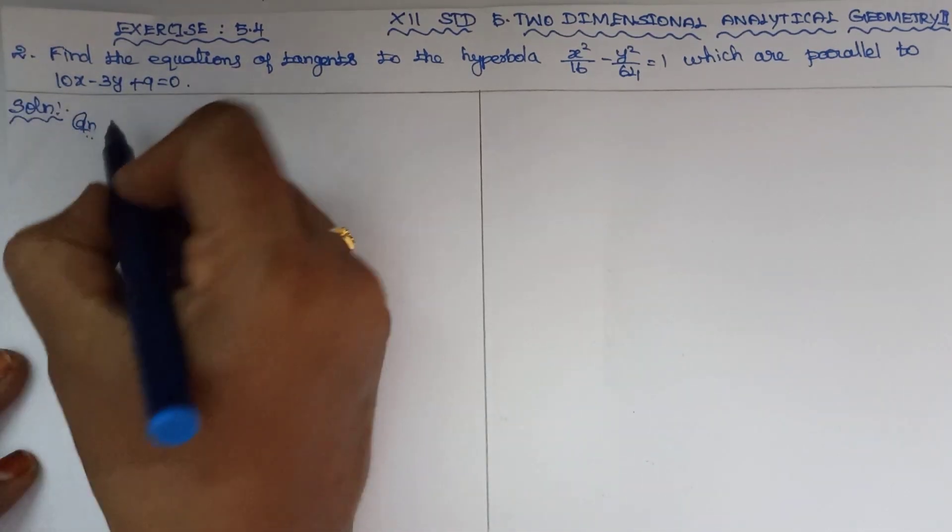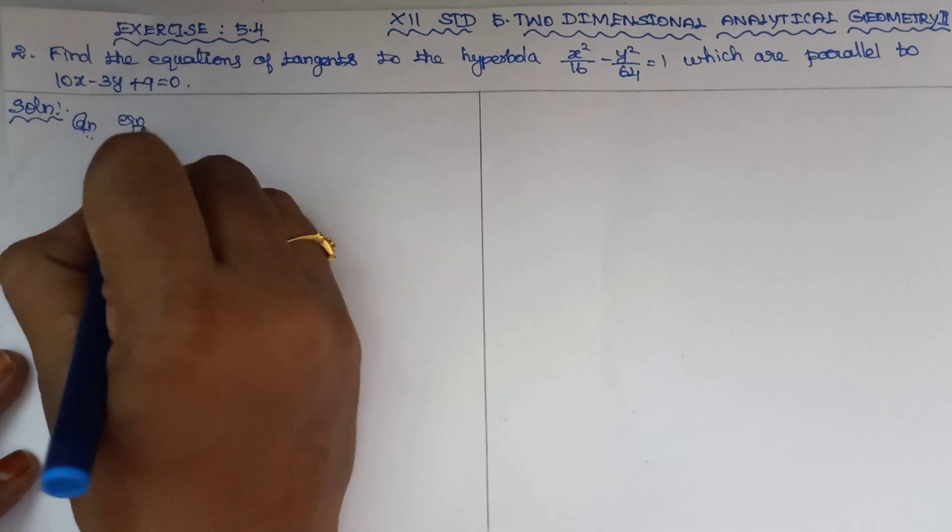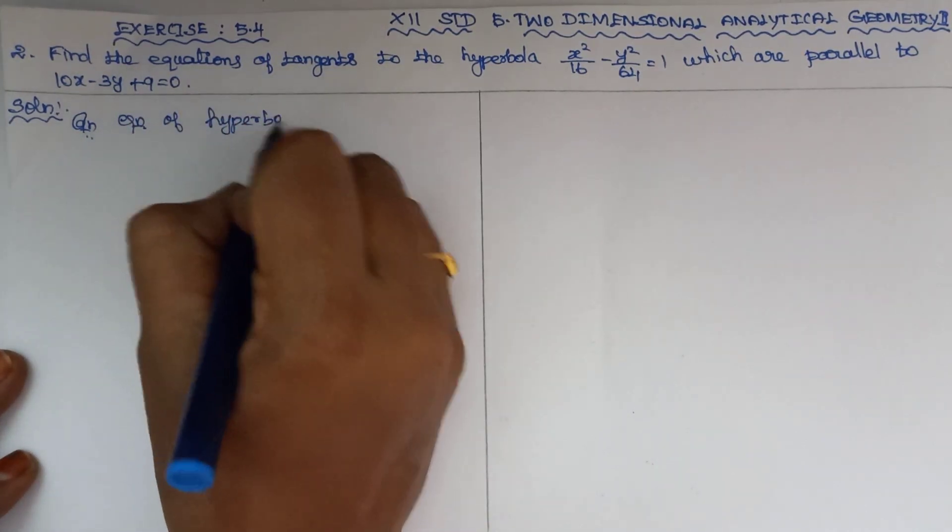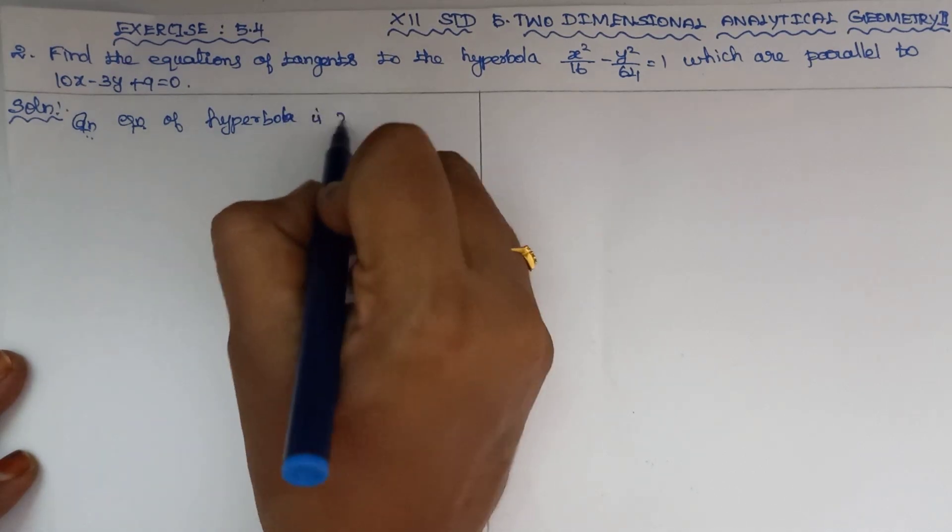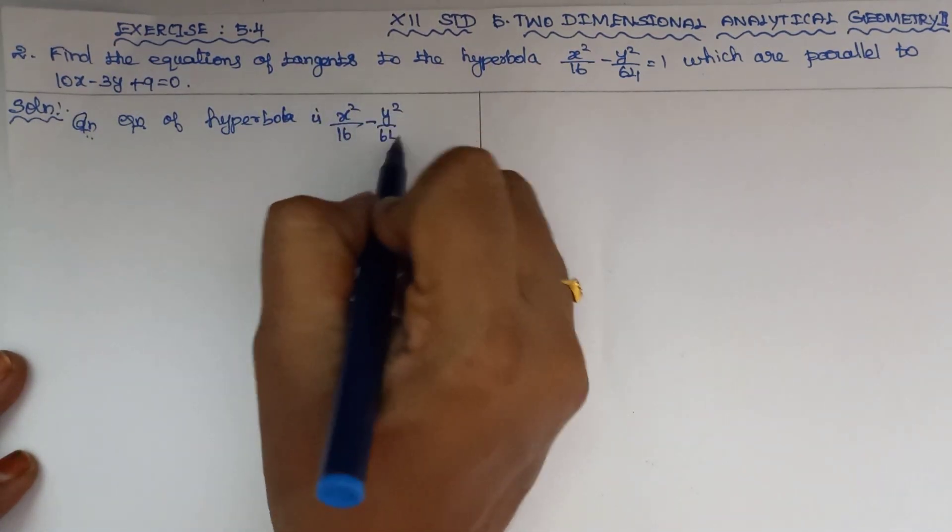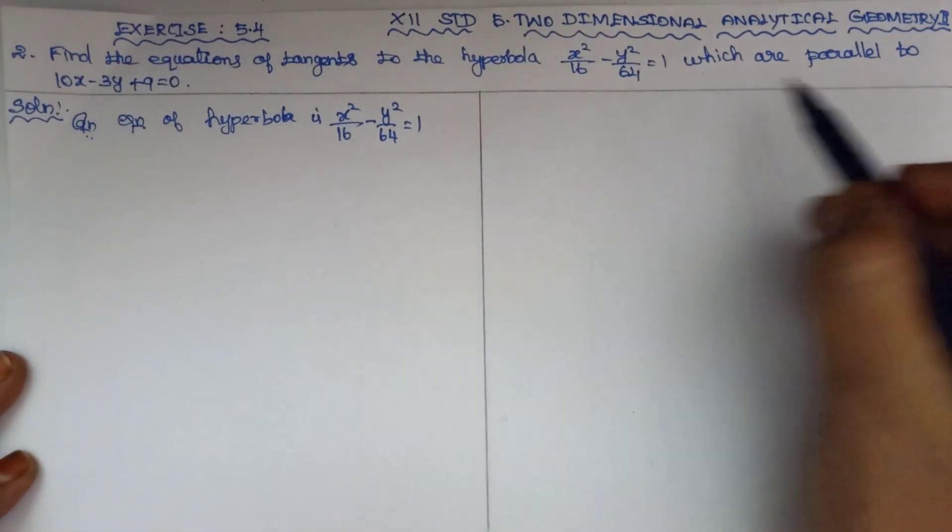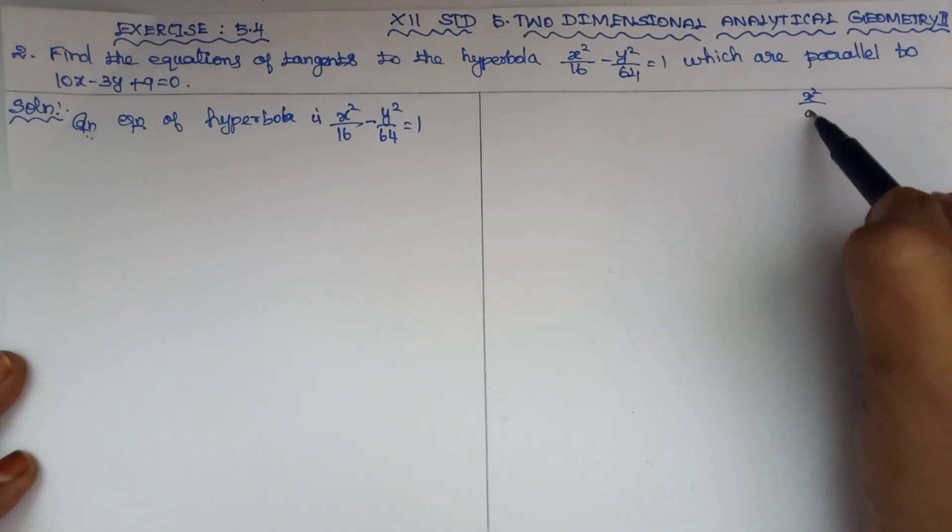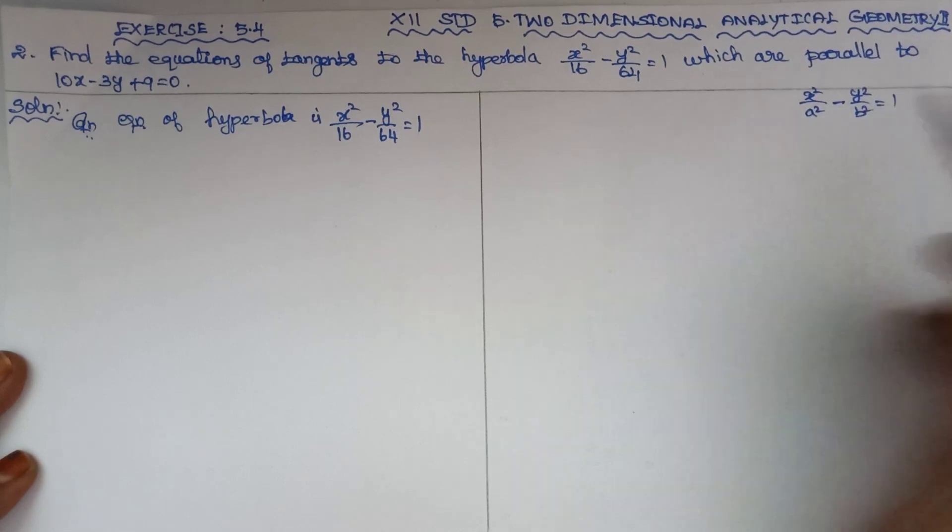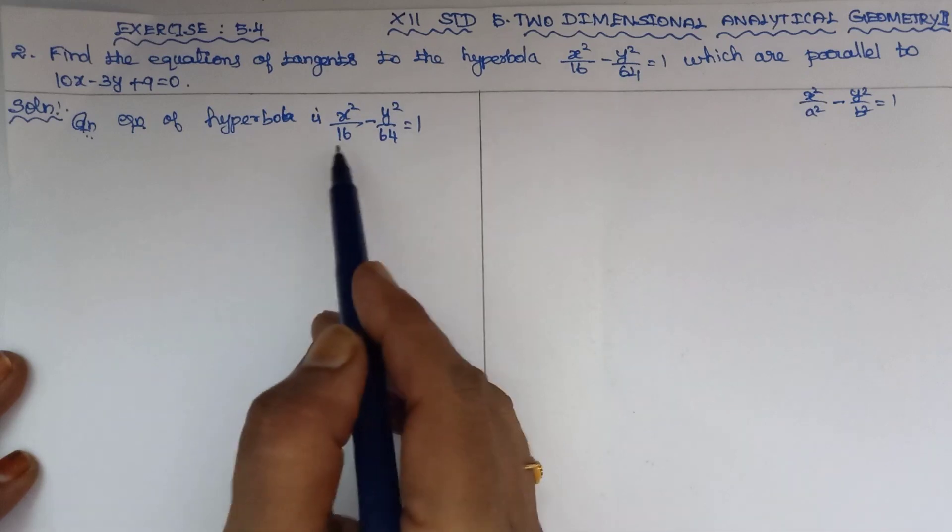That is the equation, the given equation of hyperbola is x square by 16 minus y square by 64 equal to 1. Hyperbola equation is x square by a square minus y square by b square equal to 1.